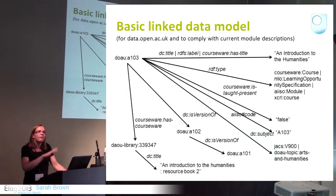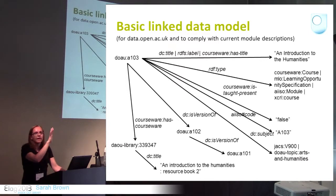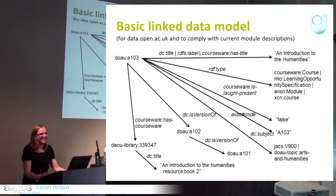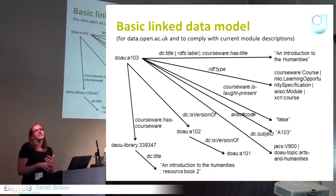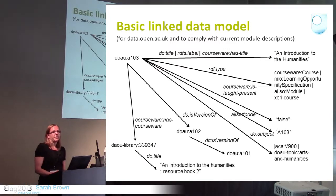We did have a dataset around courses available already before STELA started. But what we were able to do was add to that and give it a historical perspective. Here we've got a model telling us about A103 — that's the course code — called An Introduction to the Humanities. What STELA added was version information: we can see there was a previous version of A103, which was A102, and prior to that A101. We give them that extra layer of information, so if people were interested in A103 now, potentially they could find the previous version and see if there was anything in that earlier course that could be of use.